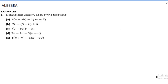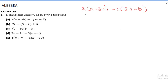The first question says: expand and simplify each of the following. The first one is 2(a − 3b) − 2(3a − b). When looking at this, all you need to do is open the bracket, and when opening the bracket you need to take cognizance of the signs. So 2 times a gives us 2a.